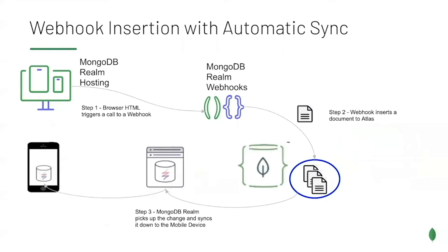I'm also going to set up a static HTML page in MongoDB Realm on the hosting tab, and then connect it to a webhook which is a JavaScript function. We're going to put some code in there which will insert a document that matches the partition key value we've already set up, and that should automatically reflect down to the Realm Sync enabled client — you'll see that new insertion happen automatically. So without further ado, let's get started.